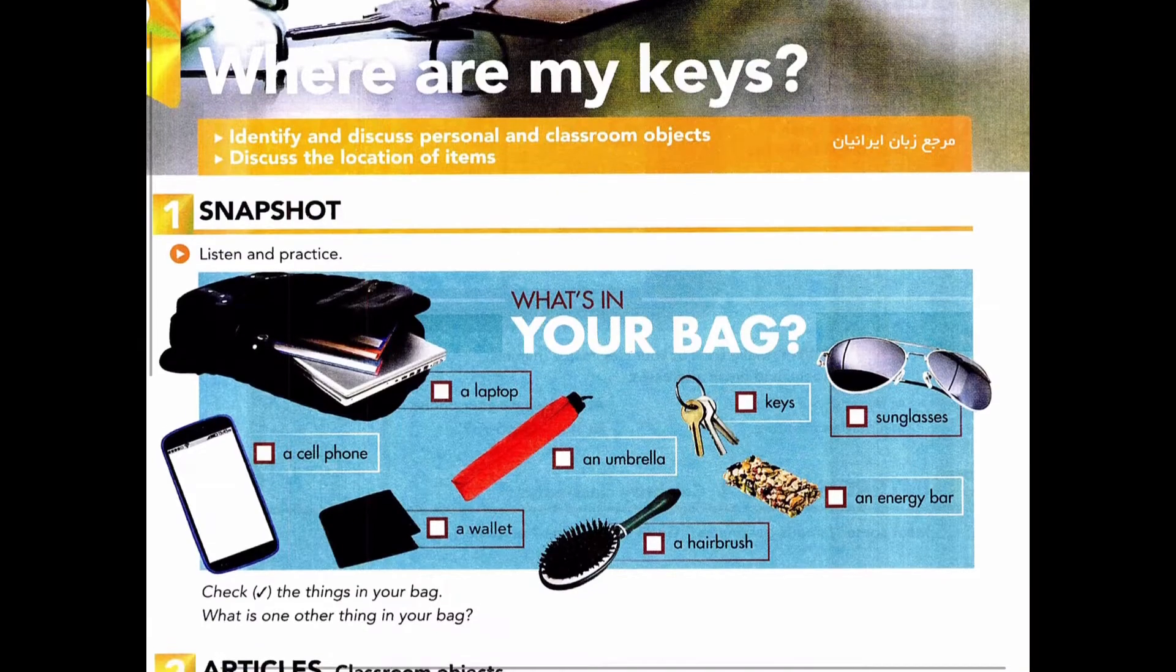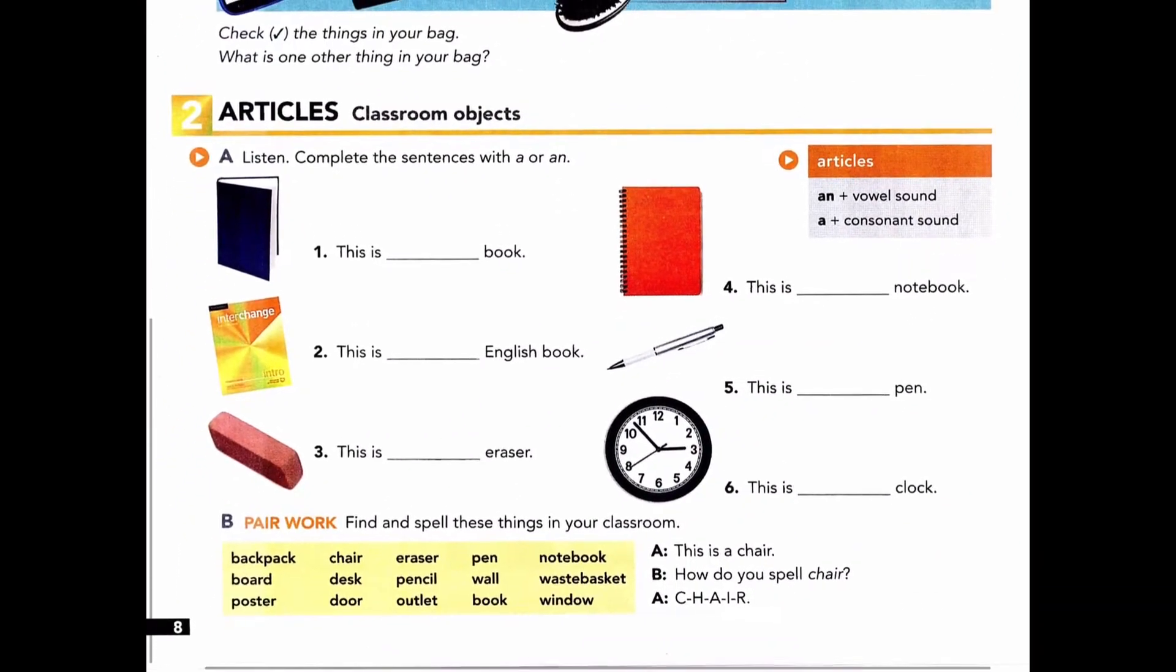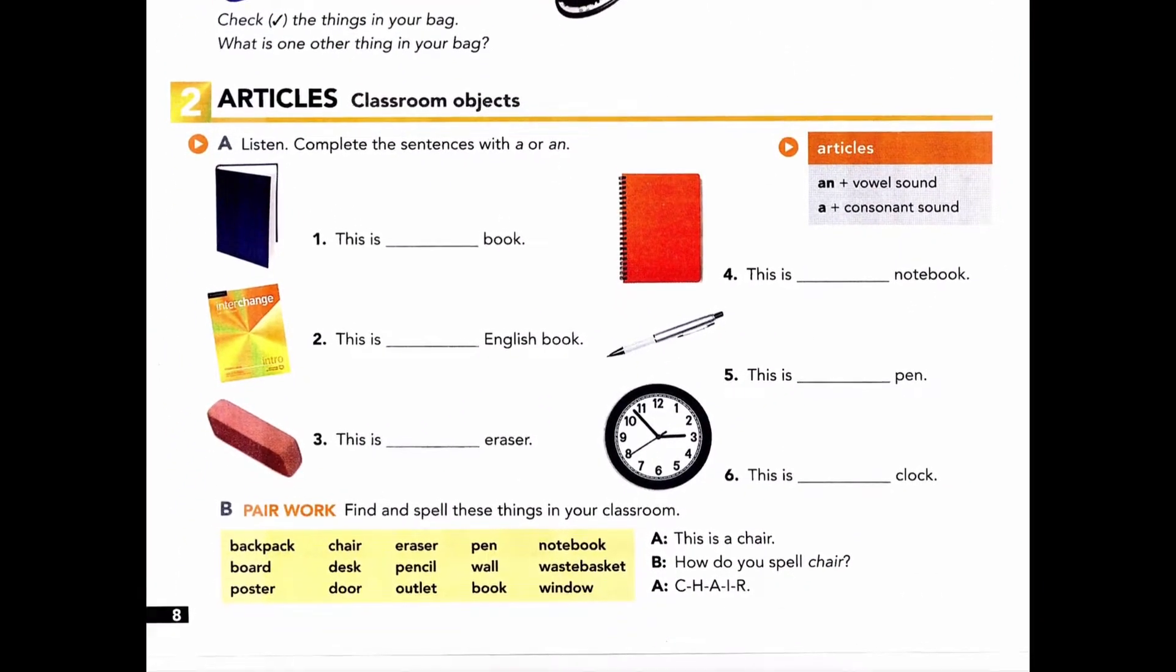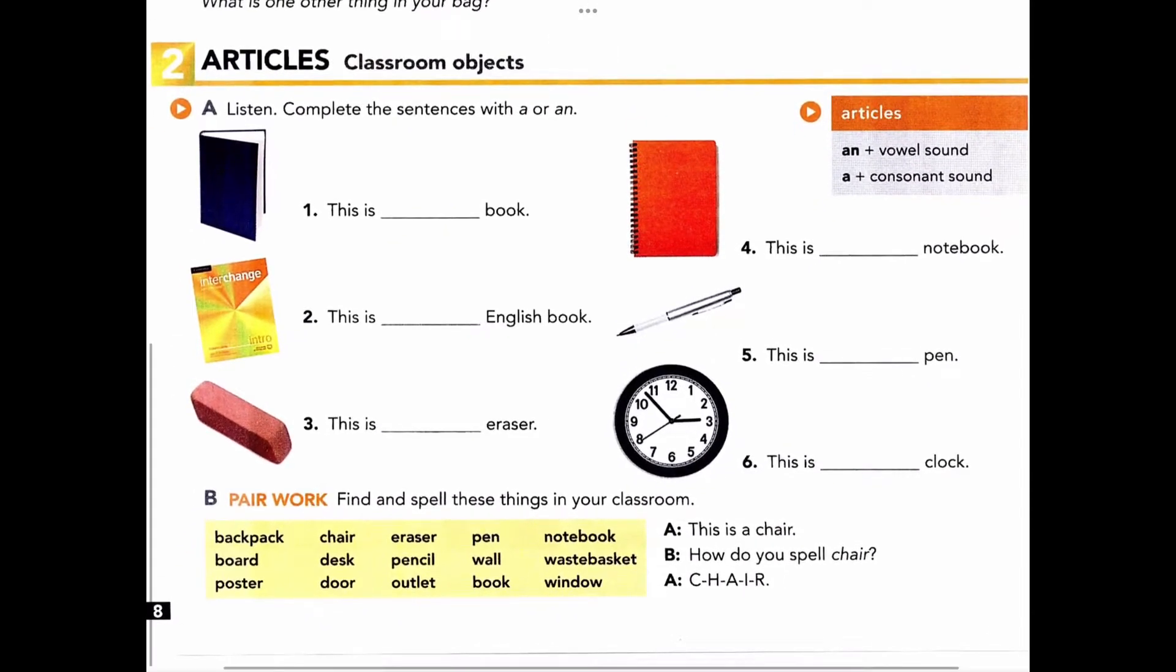Page 8, Exercise 2: Articles, Classroom objects. Part A: Listen and complete the sentences with A or An. Articles: An plus vowel sound, A plus consonant sound. One: This is a book. Two: This is an English book.